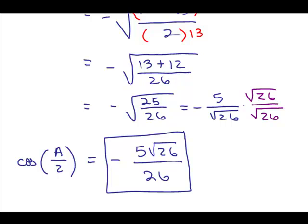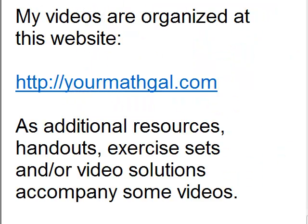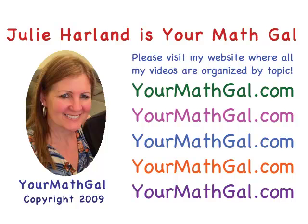And so we've answered both questions. So the cosine of A over 2 is negative 5 square roots of 26 over 26. The other part of the problem was to find the sine of 2A, and we found that that was negative 120 over 169. Please visit my website at yourmathgal.com, where you can view all of my videos, which are organized by topic. Thank you.